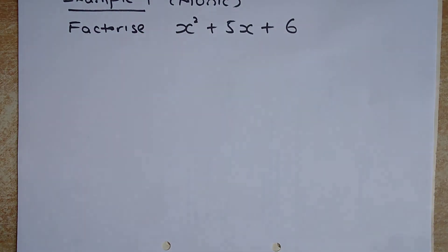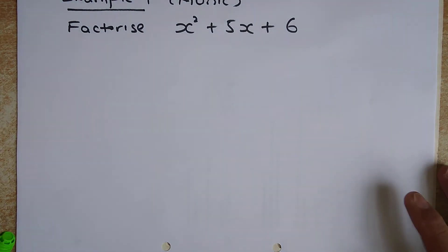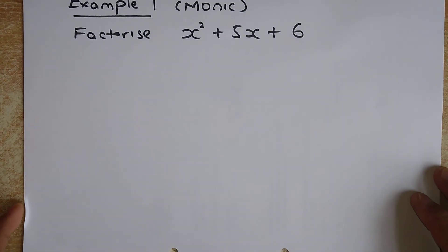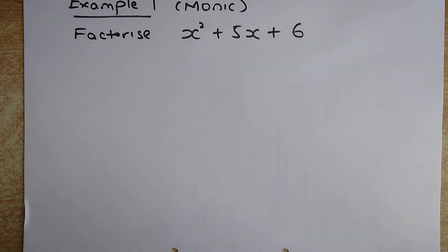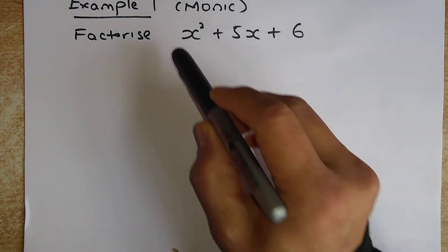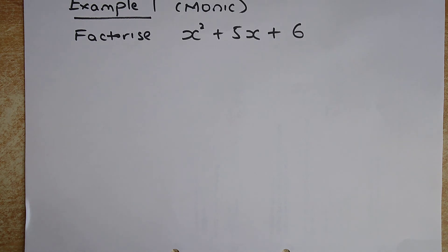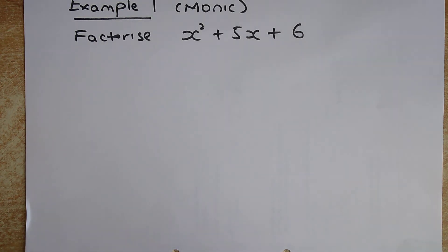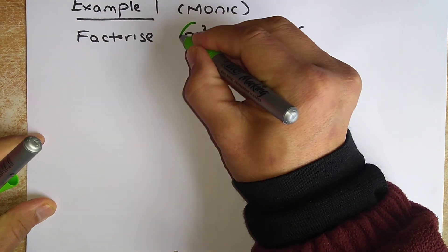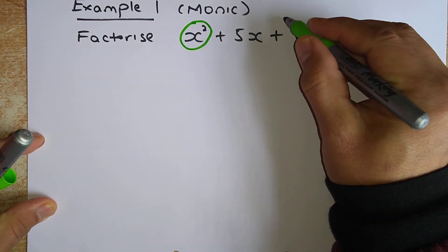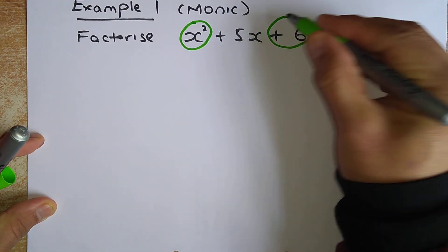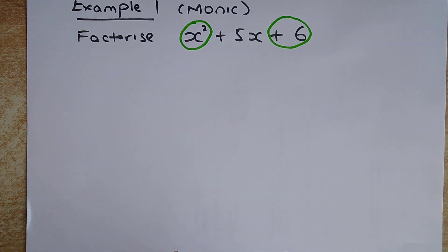The first example is to factorize x squared plus 5x plus 6. This is a monic example because the coefficient in front of x squared is 1, so this is very simple. The first thing we are going to use is called the bubble method — you put a bubble around the outer numbers: the first bubble is x squared and the second bubble is 6.